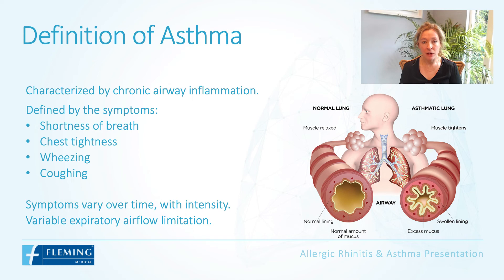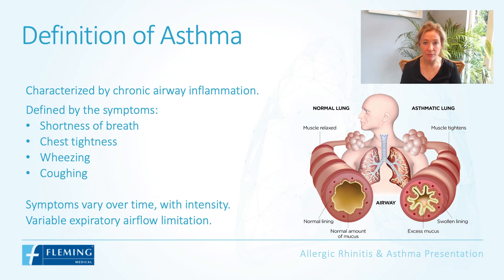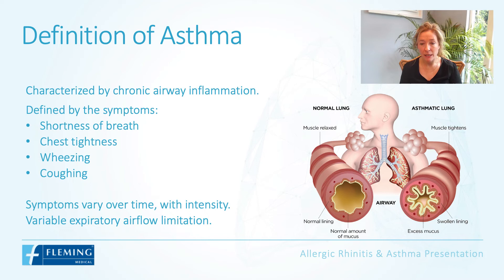Asthma is characterized by chronic airway inflammation and defined by shortness of breath, chest tightness, wheezing and coughing. These symptoms can vary over time and in intensity, and there is variable expiratory airflow limitation. Looking at this image, the difference is striking between the small airway or bronchial in the normal lung versus the asthmatic lung. The structural and inflammatory changes in asthma lead to bronchial thickening and swelling, increased mucus production and bronchial constriction.